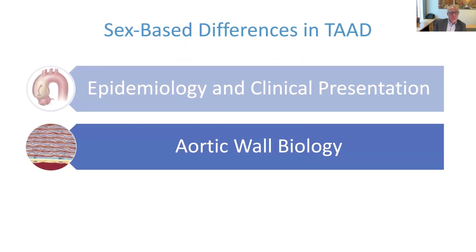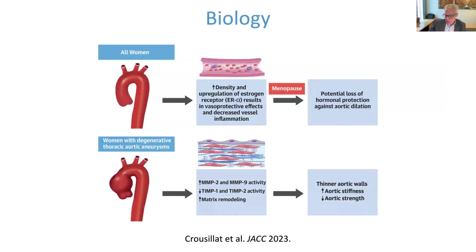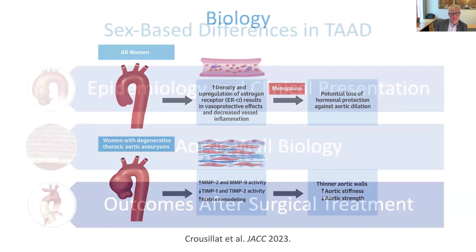Shifting briefly to aortic wall biology — Drs. Cassis and Sips will cover this in much more detail — but a few general comments. In women, there is a recognized protective effect of estrogen on the aortic wall, including reduction in wall inflammation, protection that may be lost during menopause. In the setting of aortic aneurysms, aortic walls from females exhibit elevated levels of proteases — notably MMP2 and MMP9 — which destroy extracellular matrix components, and reduced levels of the inhibitors of those proteases, potentially contributing to increased aortic wall degeneration and higher risk of dissection and rupture.